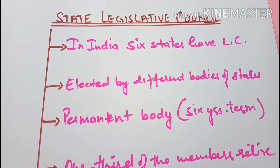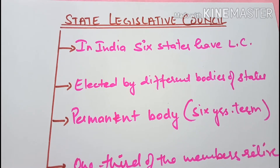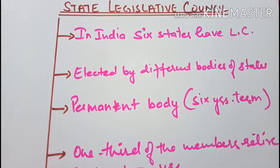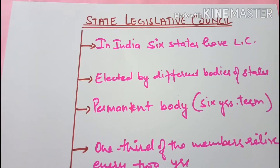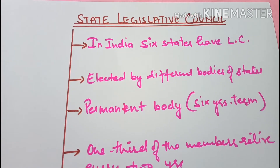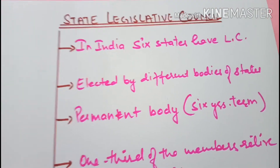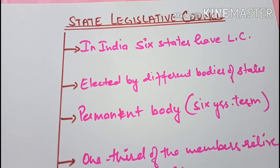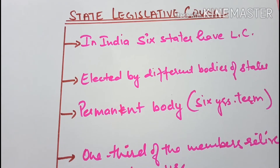Next heading of the chapter is State Legislative Council or Vidhan Parishad, the Upper House. As I have told you before, this is not in every state. This is only in India's six states: Jammu and Kashmir, Bihar, Karnataka, Maharashtra, Uttar Pradesh, and Telangana. These members are not directly elected by the people. They are elected by some different bodies of the state such as Municipal Corporation, Panchayati Raj, and all. These members are permanent bodies.